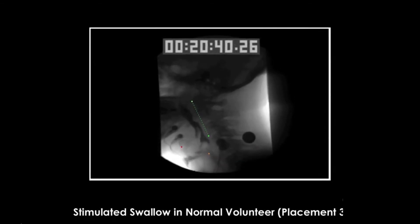Here is the stimulated swallow in the same healthy adult using placement 3b.